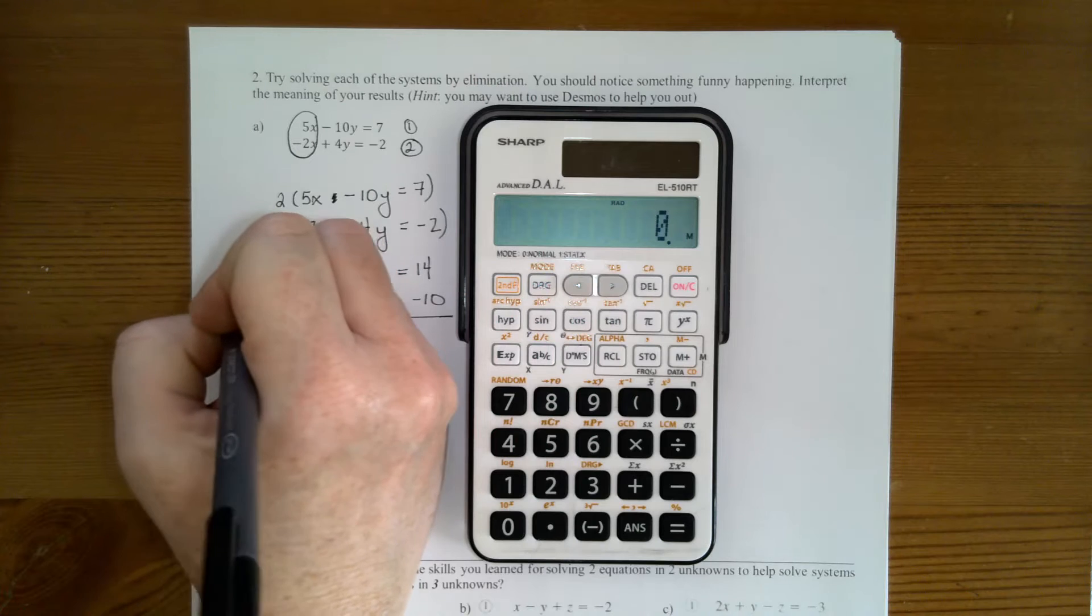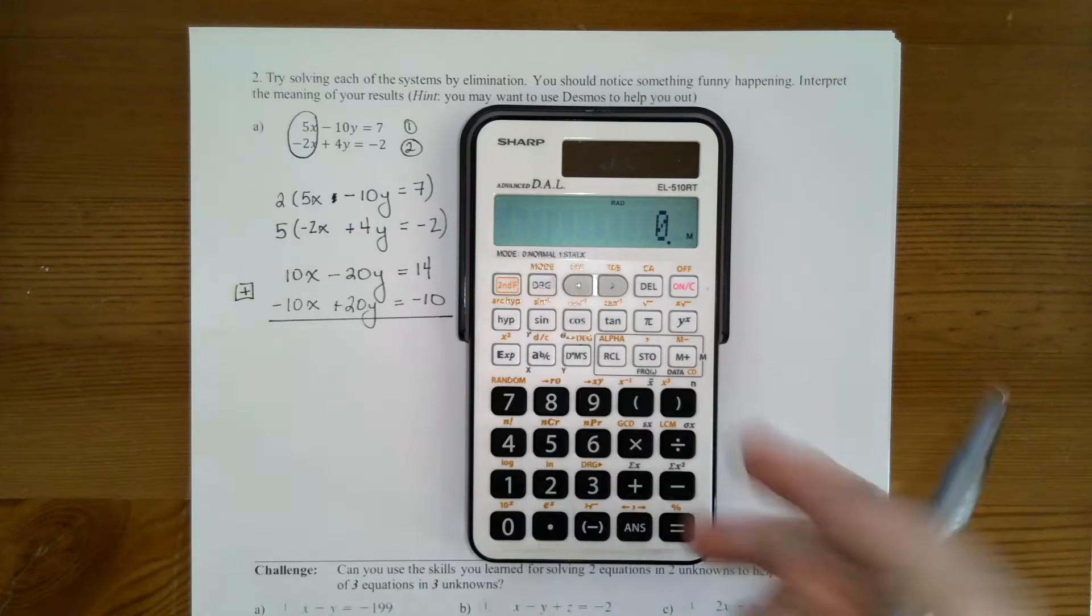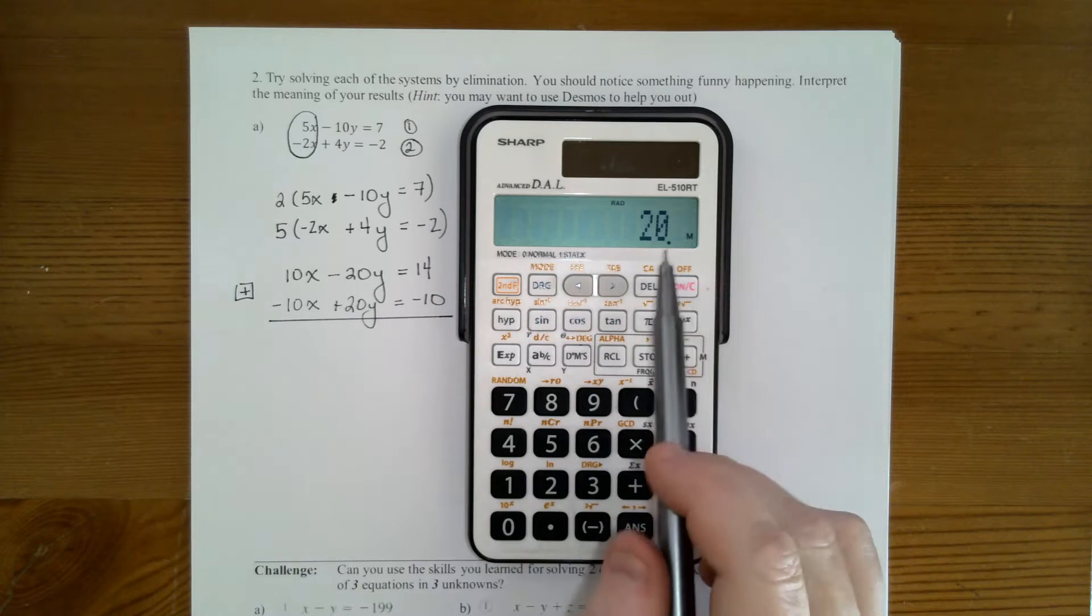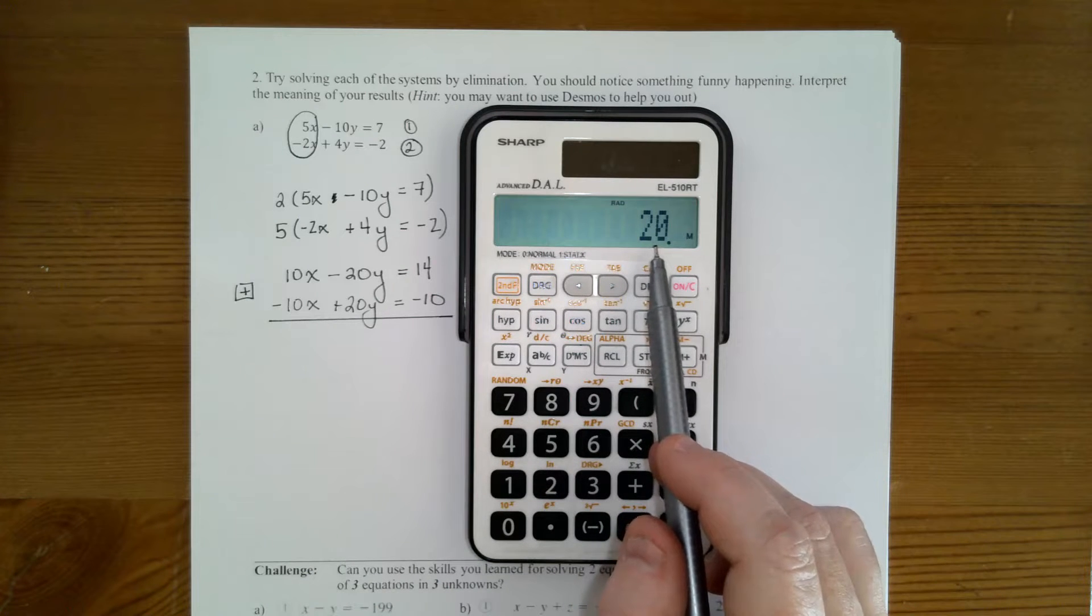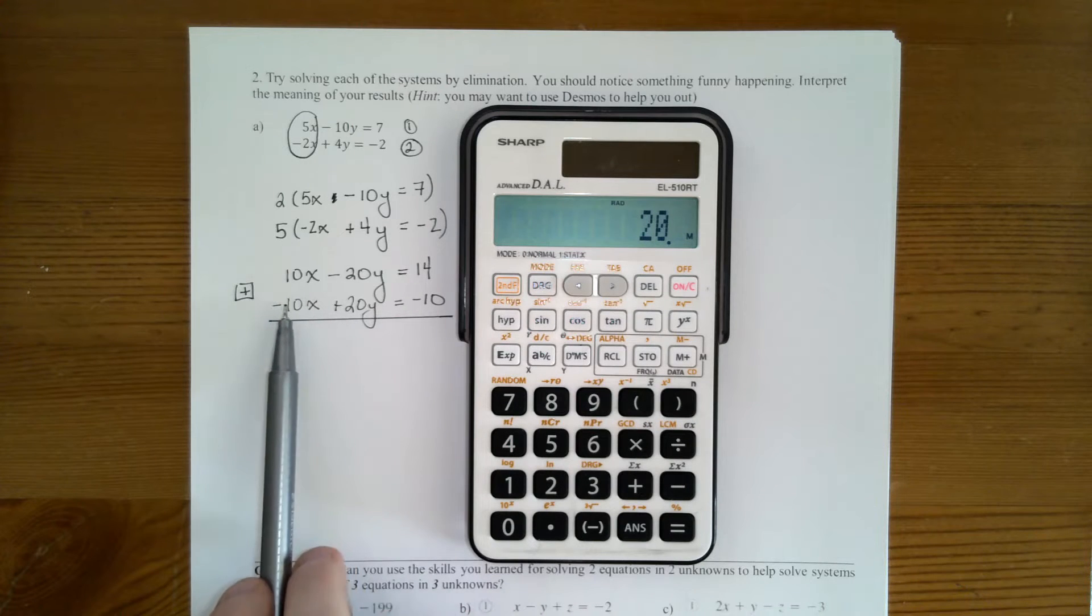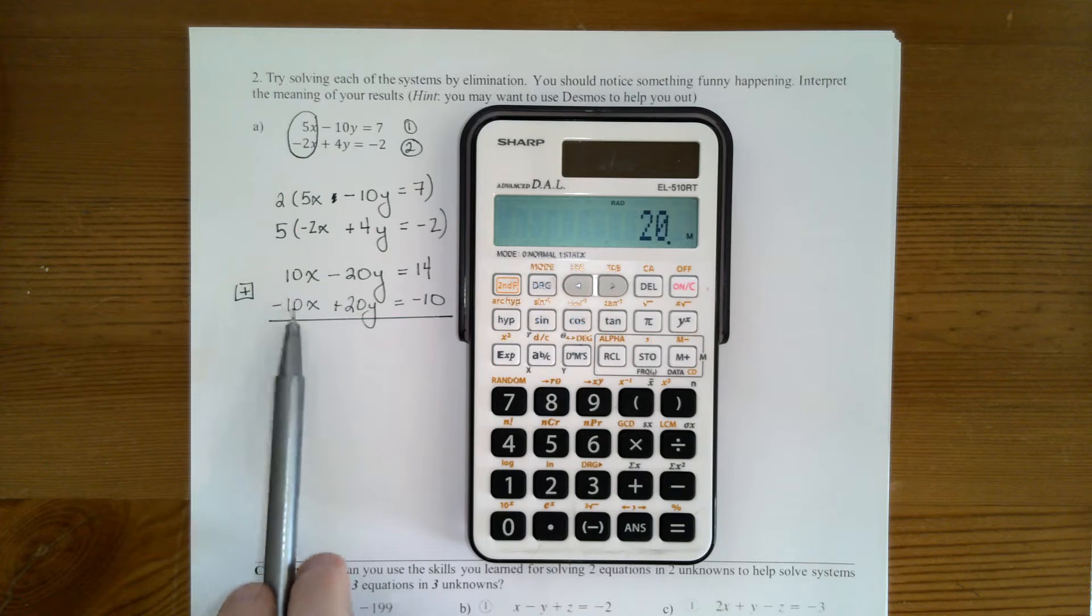So I'm going to add these up. My other option would have been to subtract them. But if I do 10 minus negative 10, then I get 20, which is not eliminated. So I want to do addition. Remember, if the signs are different, add. And if the signs are the same, subtract.